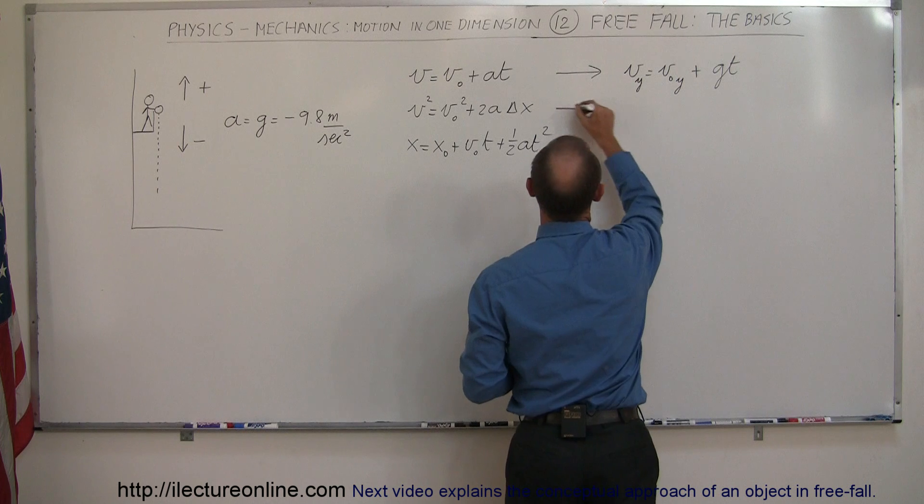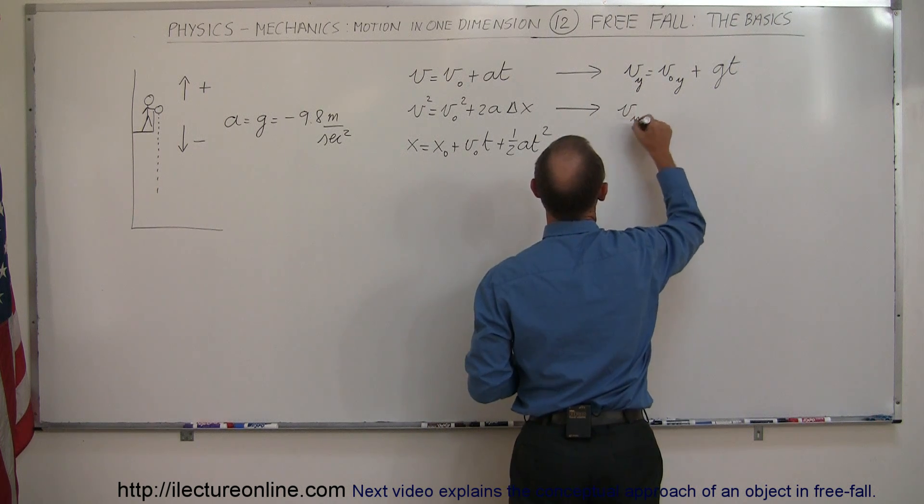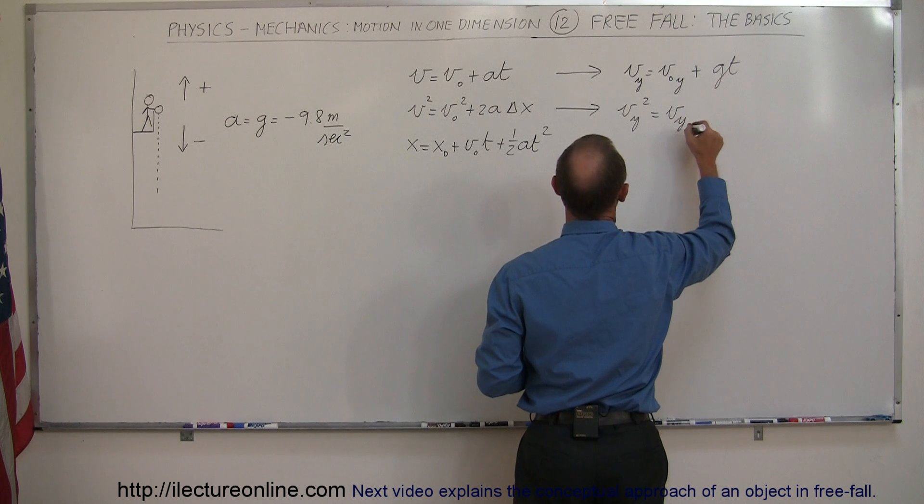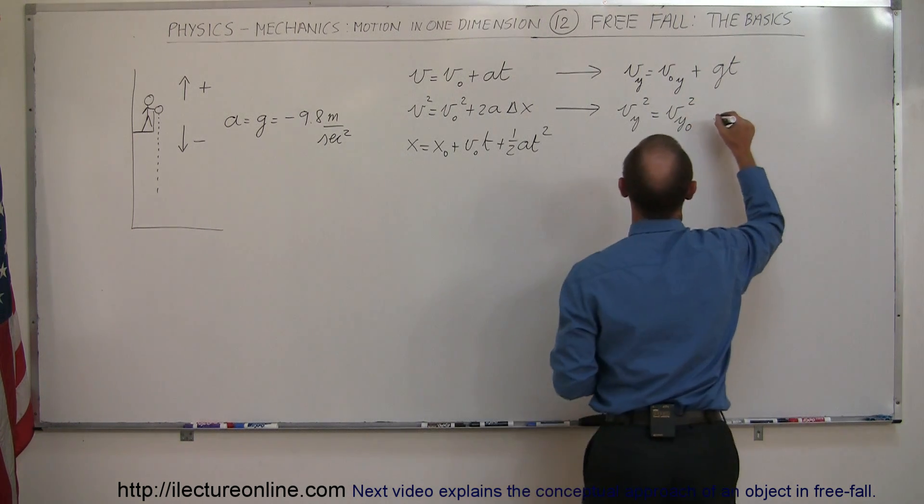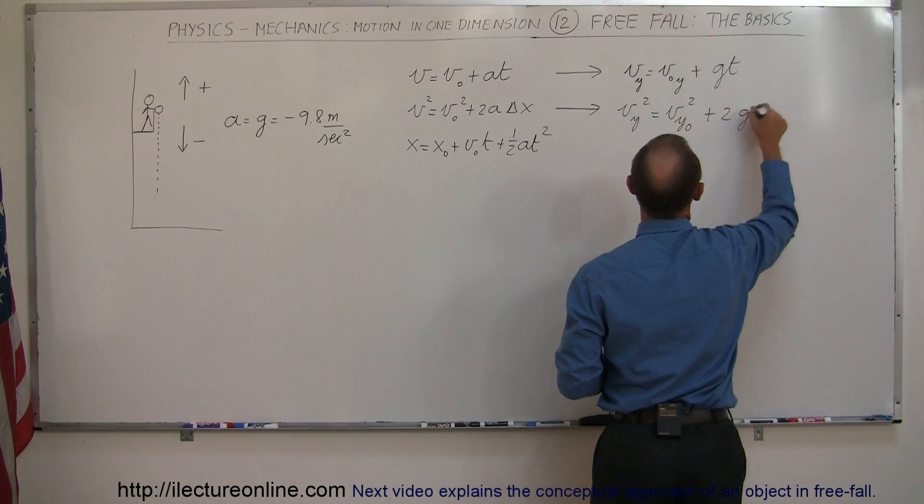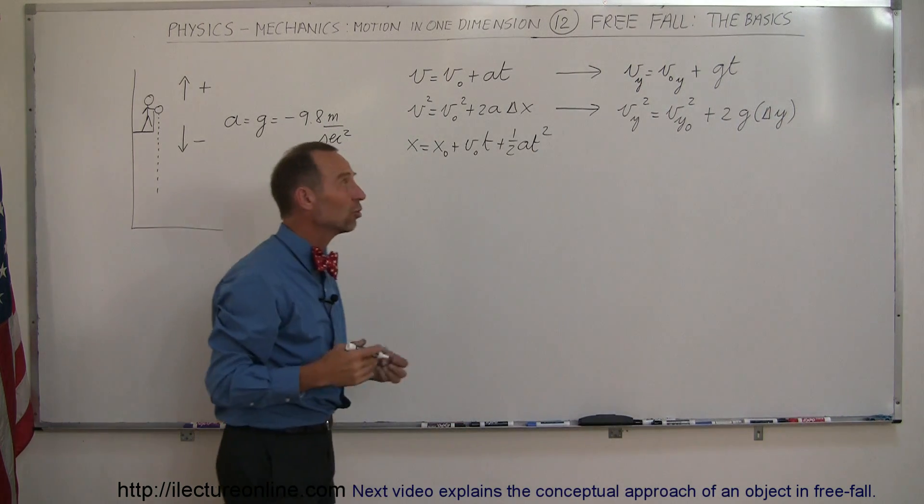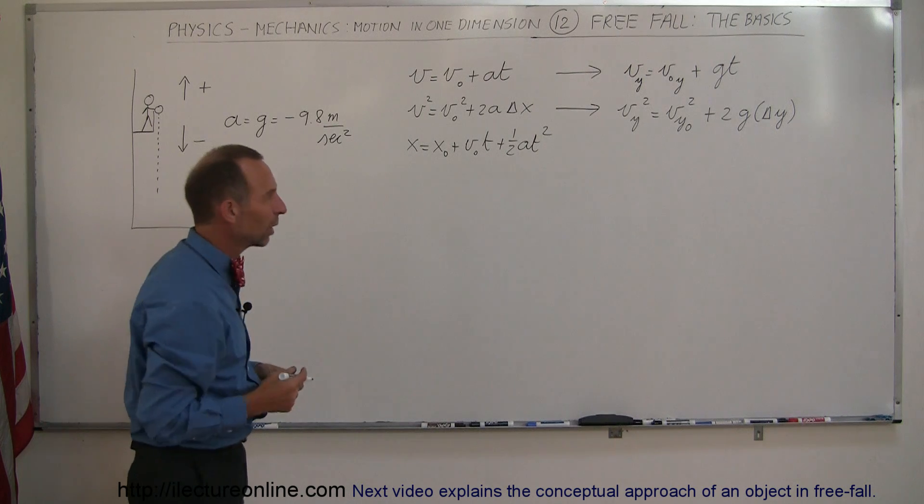The second equation then becomes V in the y direction squared equals V in the y direction initially squared plus 2G times the change in the y. So now instead of writing change in x, we write change in y, which is y2 minus y1.